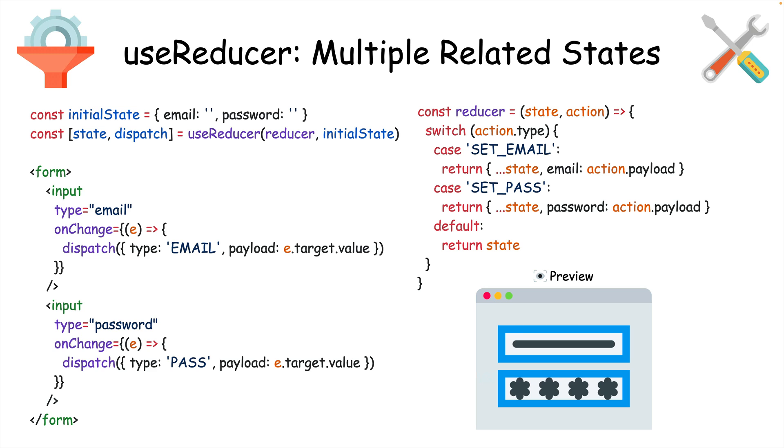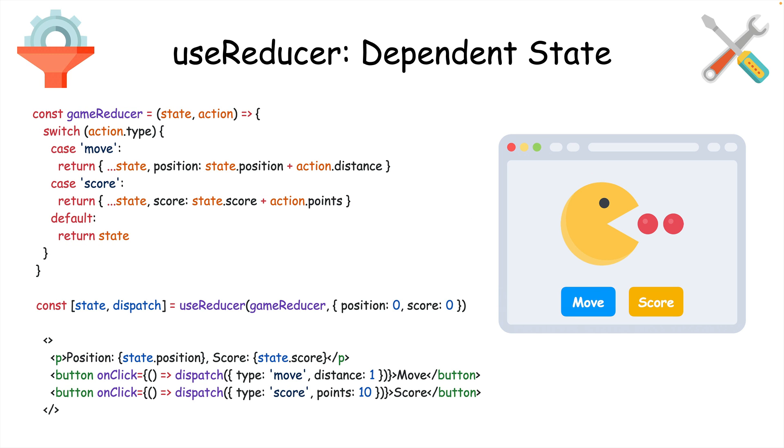useReducer works well for simplifying components with multiple related state values like multiple inputs within a form. It's also good for components where the state depends on other values, like in this game-based example. This makes useReducer a great choice for apps with lots of user interactions.